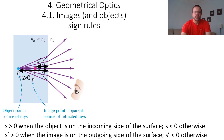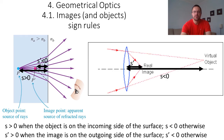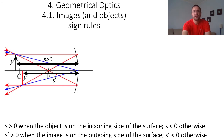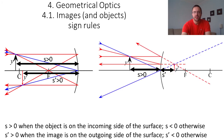In another example the image is on the left and the outgoing side of the surface is on the right, so s prime is negative. In one case the image is on the right and the outgoing side of the surface is also on the right, so s prime is positive. For another, the image is on the left and the outgoing side is also on the left, so s prime is positive. And when the image is on the right but the outgoing side is on the left, s prime is negative.